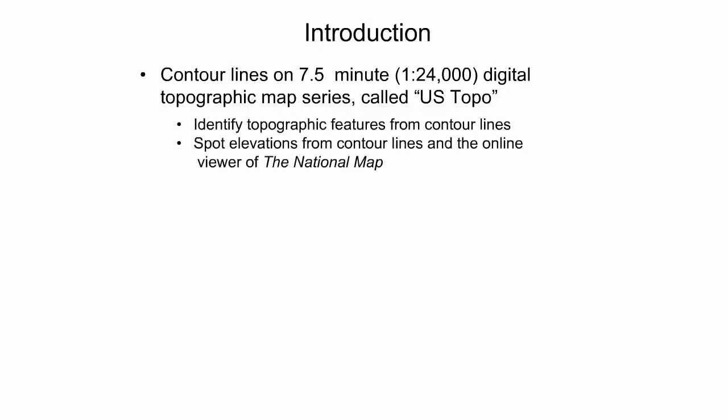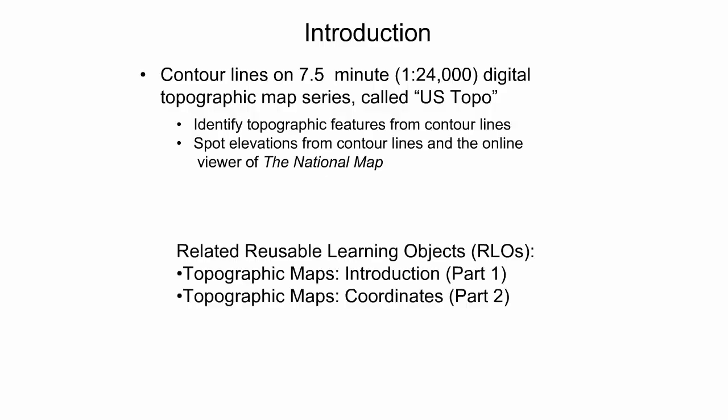The presentation explains how to identify topographic features from the shape and spacing of contour lines. It also demonstrates how spot elevations are obtained through interpolation between contour lines and using the online viewer of the National Map. This is the third of three RLOs developed on topographic maps; two related RLOs providing an introduction to US Topo maps and coordinate reading in greater detail are also available.